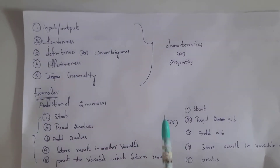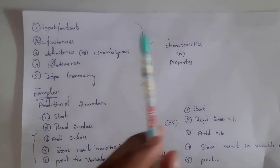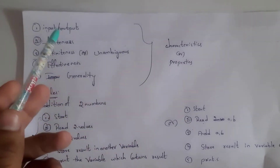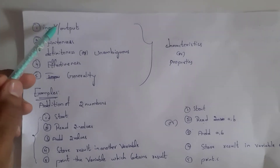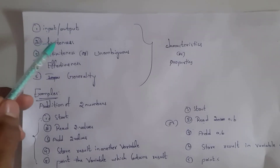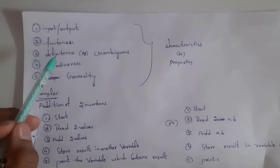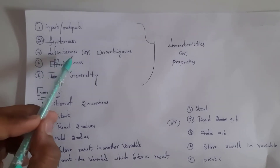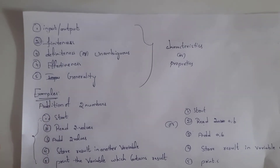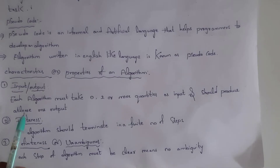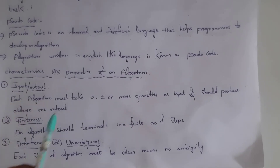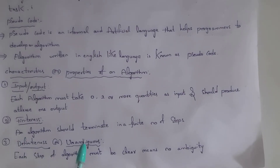These are the properties — also called characteristics — that we need to know before writing an algorithm. The five characteristics are: first, Input and Output; second, Finiteness; third, Definiteness (also called Unambiguous); fourth, Effectiveness; and fifth, Generality.